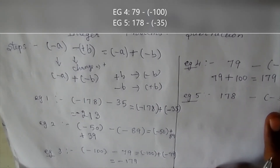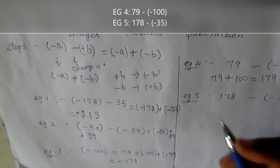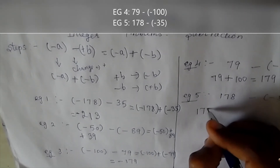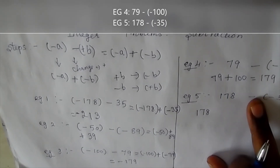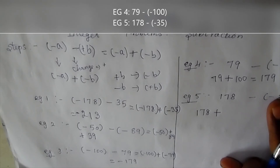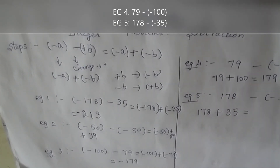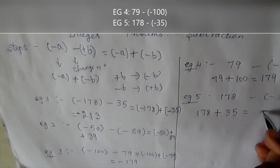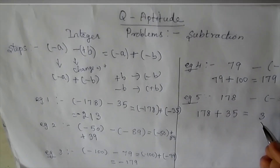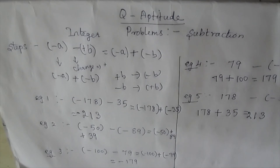Example 5: 178 minus minus 35. Write 178 as it is. The minus sign changes to plus, so minus 35 becomes plus 35. Now we add: 8 plus 5 is 13, write 3, carry 1. 7 plus 3 is 10, plus 1 is 11. So the answer is plus 213.